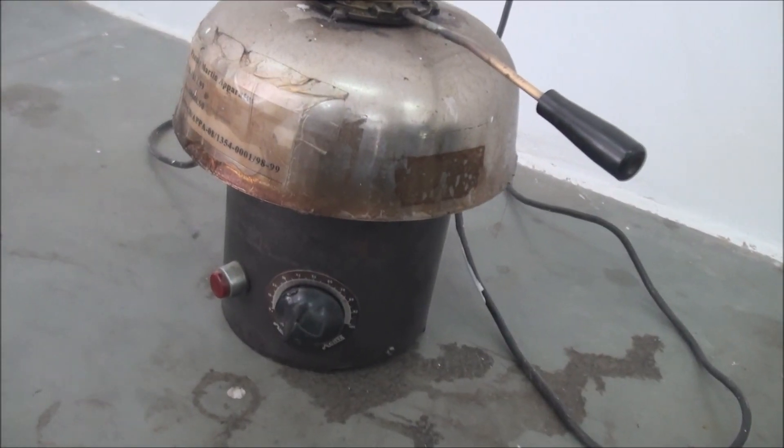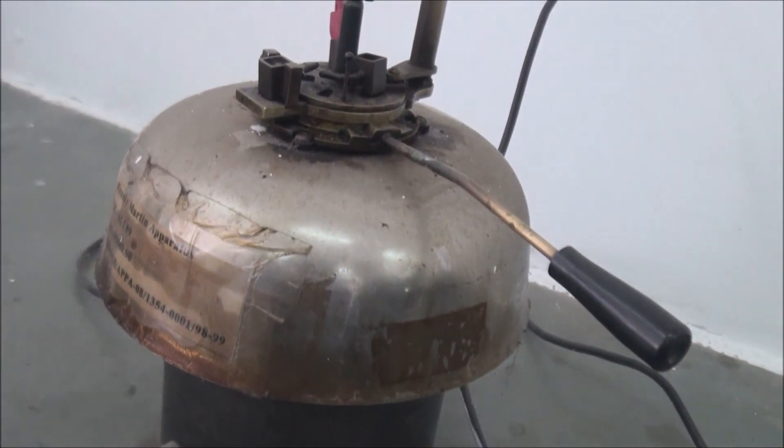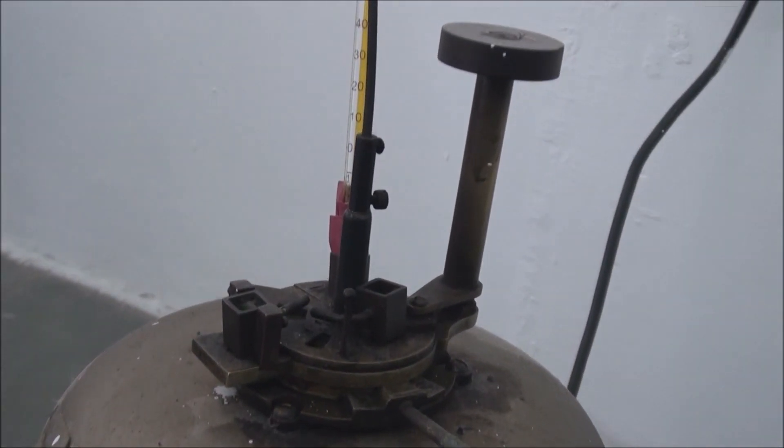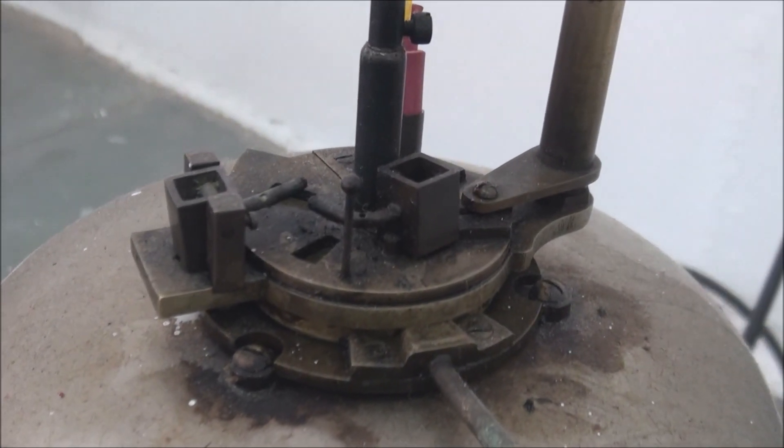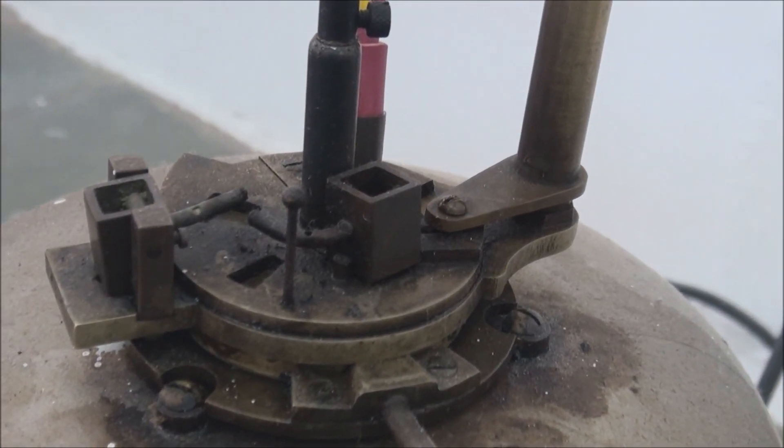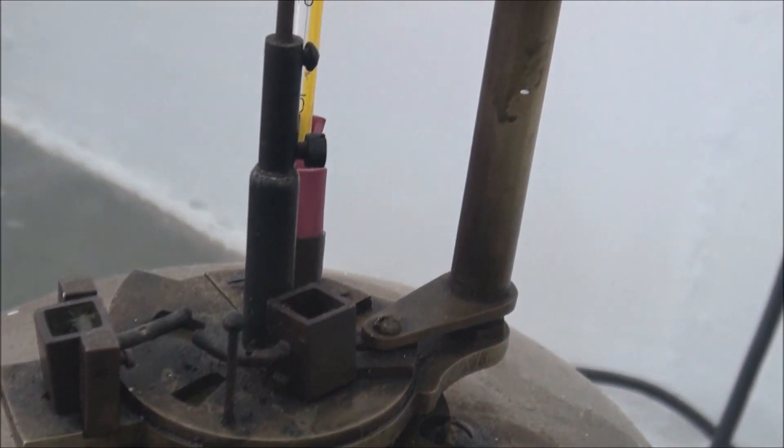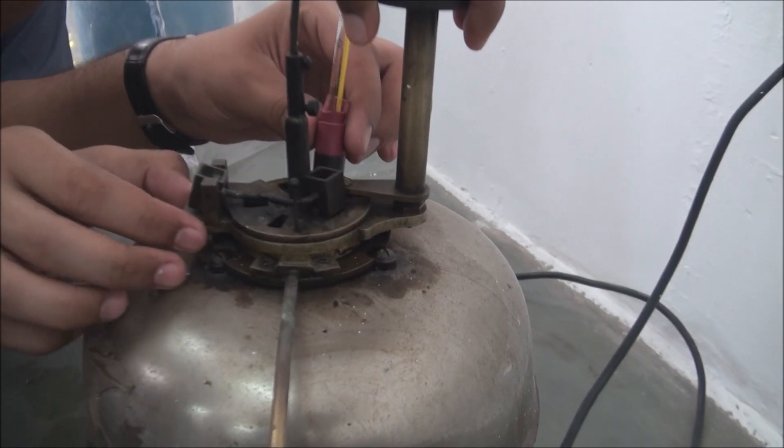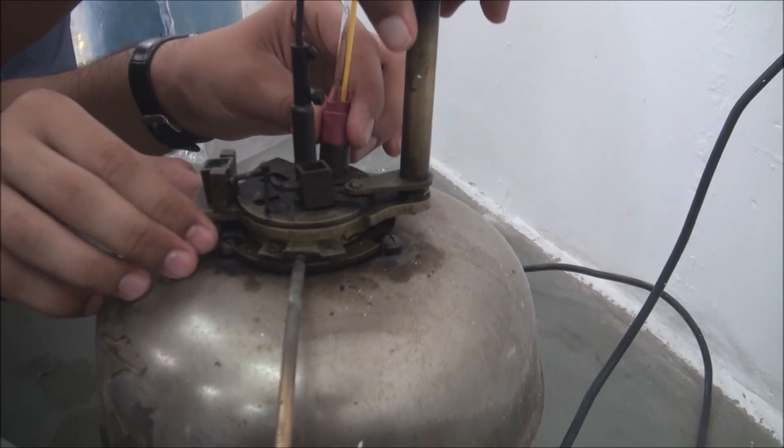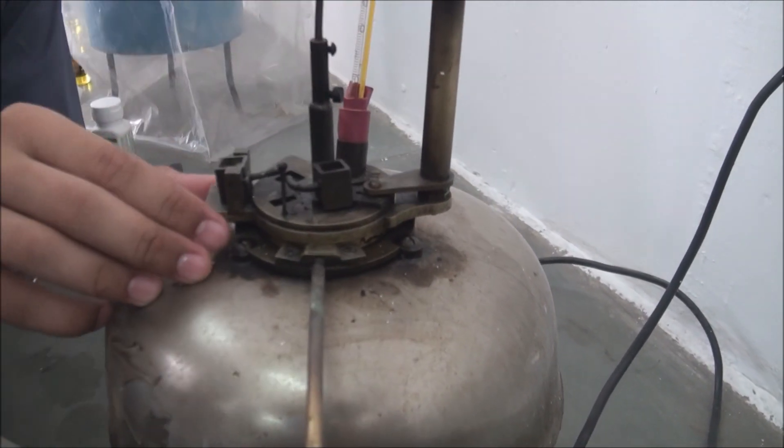The apparatus shown here is Penske-Martin closed cup apparatus. In the bottom, a dial is provided to control the temperature. On the top of the apparatus, the handle is used to remove the top cover for filling the lubricant. On the upper cover starting from left are the compartment to fill kerosene for the flame, stirrer in the center with thermometer, and a handle to open the lid to visualize the flash and fire point.